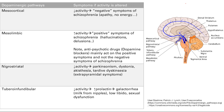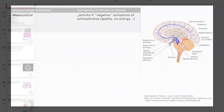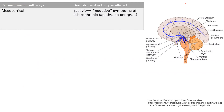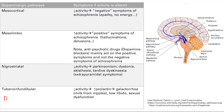Finally, we have the tuberoinfundibular pathway. The general principle here is that dopamine blocks prolactin — from the endocrine lectures. So if you decrease dopamine activity, you're going to increase prolactin. Increased prolactin will present with galactorrhea, which is increased milk production from the nipples.